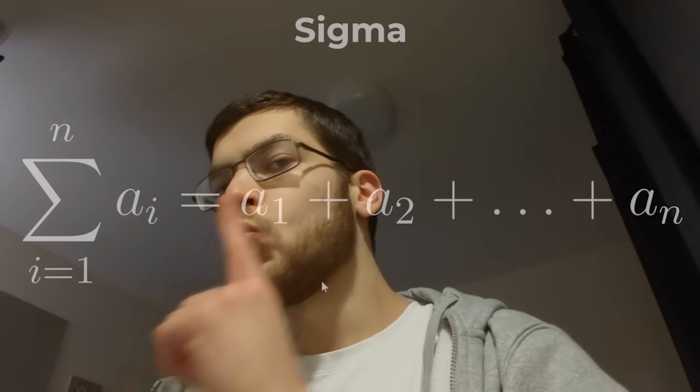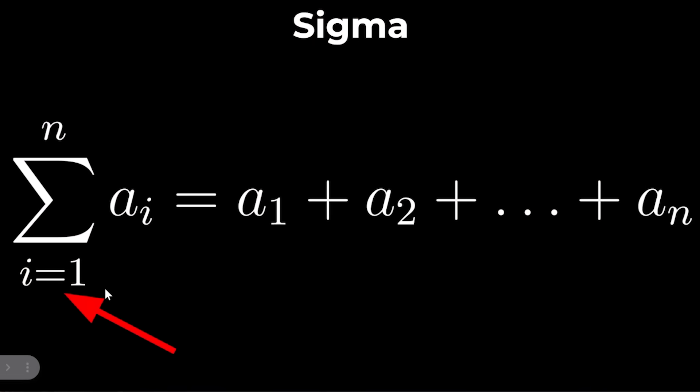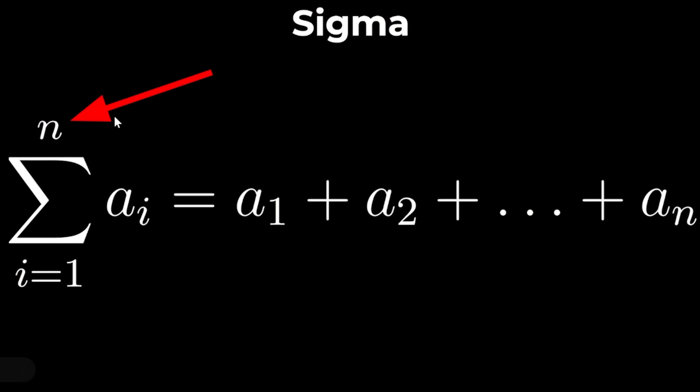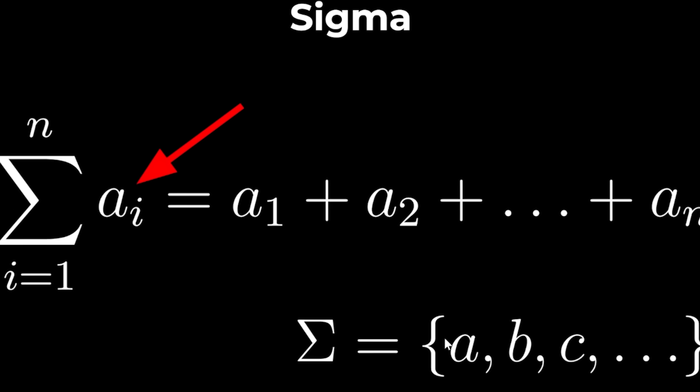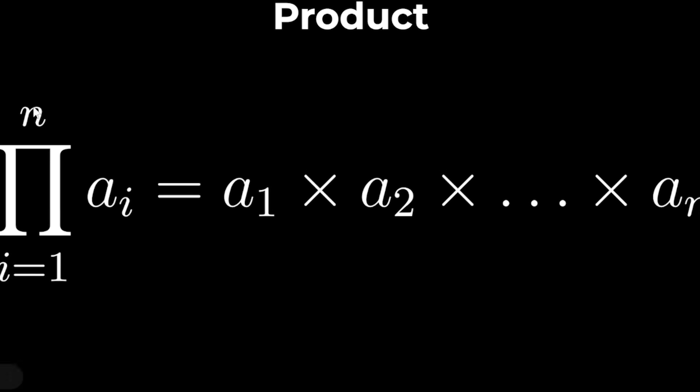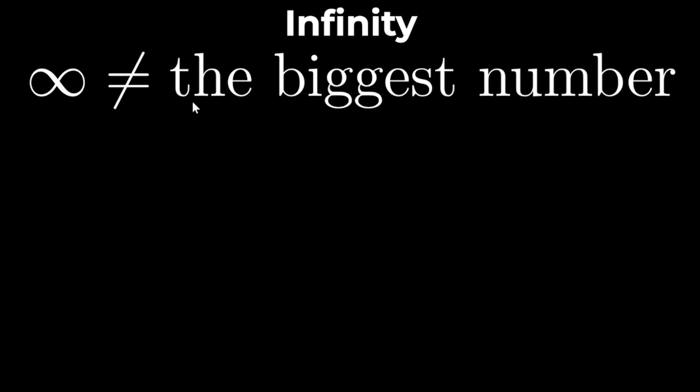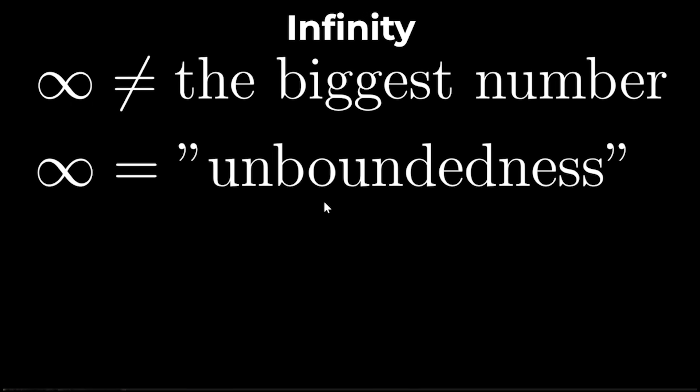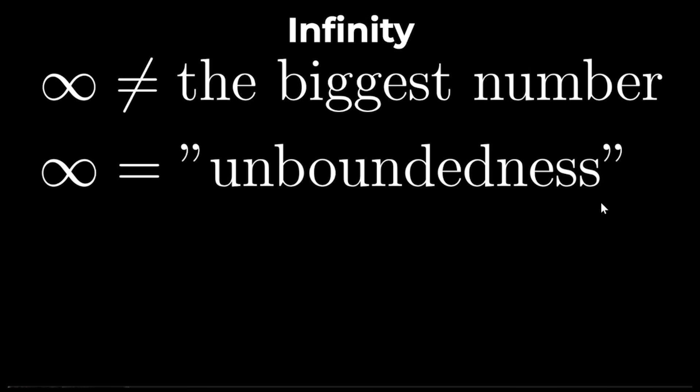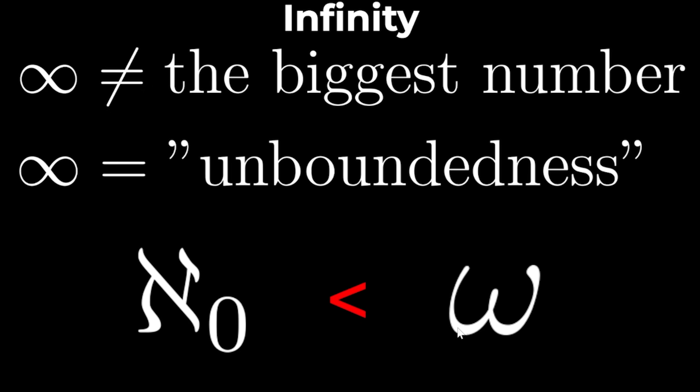Sigma is typically used to talk about the sum of many terms. The initial index is defined below the sigma and the final index is above and the terms to be summed is on the right of the sigma. Also sometimes sigma can be used to define the set of letters. Product works in the same way as sigma only when multiplying instead of adding. Contrary to popular belief infinity actually isn't the biggest number because infinity isn't a number. Infinity is a concept that means unboundedness. Aleph null is the smallest infinity and omega is the biggest.